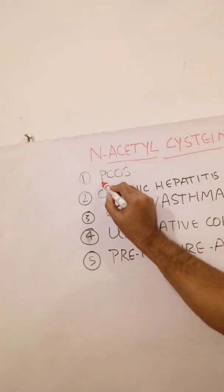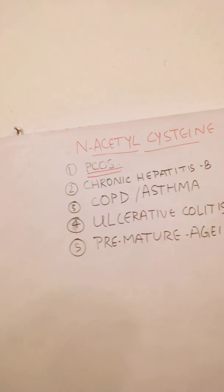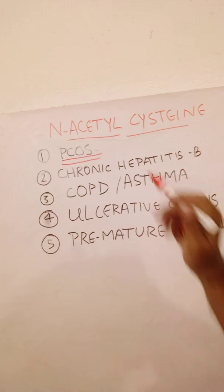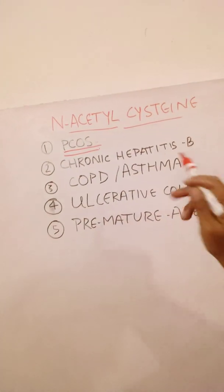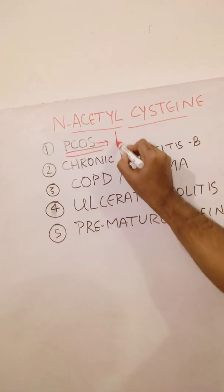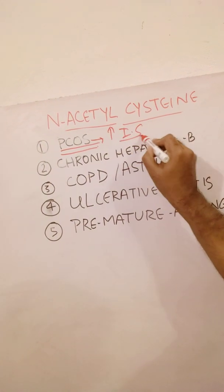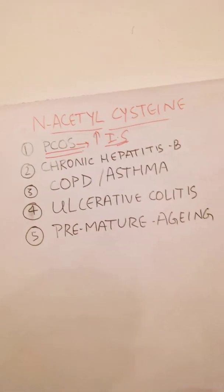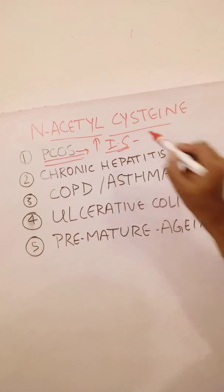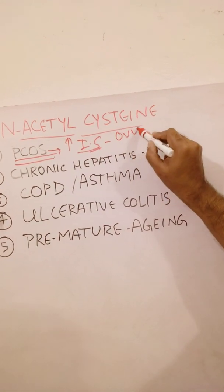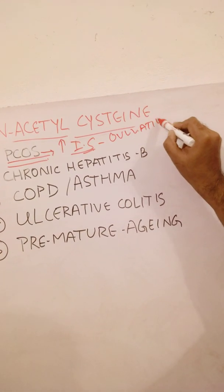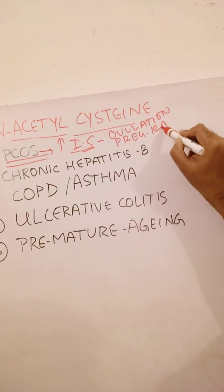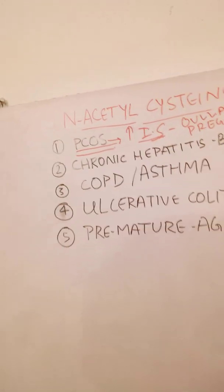The first condition is polycystic ovarian syndrome. For those who are suffering from this condition, taking N-acetylcysteine can really be helpful because it improves insulin sensitivity. In fact, it is one of the best substitutes for metformin, and it also induces ovulation and increases the pregnancy rate when used in combination with clomiphene citrate.